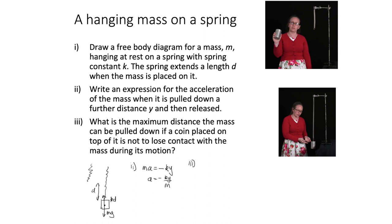Part three asks what is the maximum distance the mass can be pulled down if a coin placed on top is not to lose contact during its motion. The point where the coin is most likely to lose contact is at the top of its motion. At the top, the acceleration is directed down towards equilibrium. If the acceleration a is greater than g, the coin's acceleration — due only to gravity — will be less than the hanging mass's acceleration, which is also pulled by the spring. So we need ky over m to be less than g, which gives y less than mg over k.